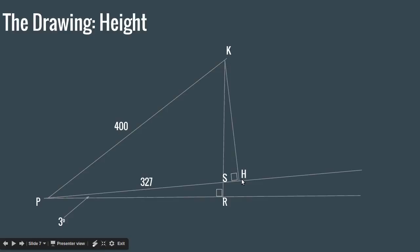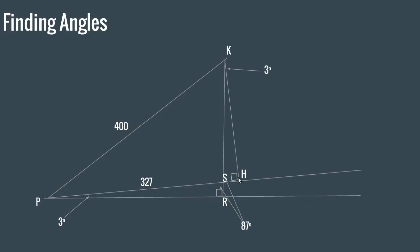So, what can we do first, now that we have the diagram set up? What I like to do first in these geometry problems is find the angles before we find the sides. Finding the angles are pretty easy. We have triangle PSR, 3 degrees and 90 degrees. That means the last angle, angle PSR, is 87 degrees. We also have vertical angles, which means angle KSH is 87 degrees.